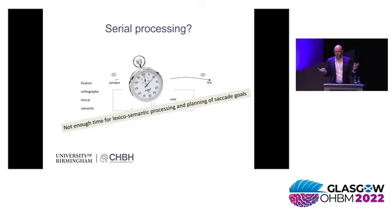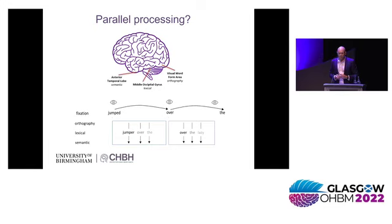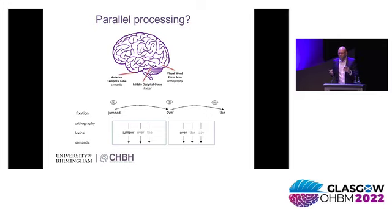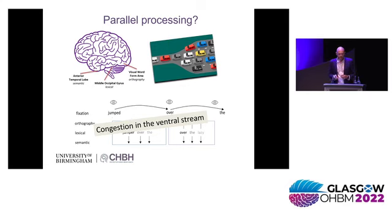Then you might argue there are plenty of neurons in the brain, so maybe there's some sort of parallel processing going on. It could be that 'jumped,' 'over,' and 'there' are being processed in parallel, even though these words are in the fovea and parafovea respectively. However, there's a problem with this strict parallel processing idea — the hierarchy in the visual system in the ventral stream implies larger and larger receptive fields and more and more complex representations down the ventral stream. This implies there's some sort of congestion going on in the ventral stream, which makes it difficult to entertain a fully parallel processing idea. One way around this is if you assume very sparse codes of representations down the ventral stream, but that notion also has problems.